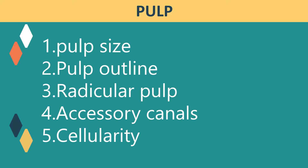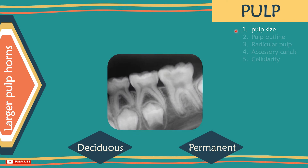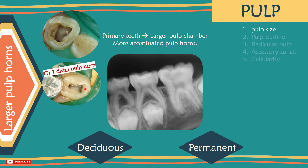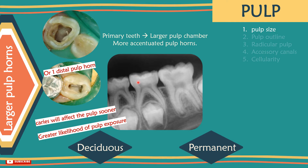Now let's compare the pulp. Pulp size: the pulp chamber in primary teeth is proportionally larger, with more accentuated pulp horns. In the upper Ds and Es, there are three pulp horns: mesobuccal, distobuccal and palatal. In the lower Ds and Es, there are four pulp horns: mesobuccal, mesolingual, distobuccal and distolingual. These features mean that caries will affect the pulp sooner, and there is a greater likelihood of pulp exposure during cavity preparation. That's why you should aim for only 0.5 to 1 mm penetration in dentine, except where caries determines deeper preparation.